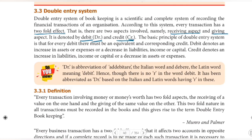In the double entry system we have basic rules, and based on those rules we will solve sums. These are called the golden rules of double entry system, or golden rules of accounting. The golden rules are based on the two-fold effect. The golden rule of accounting states: for every debit there must be an equivalent and corresponding credit. So for every debit transaction there must be a corresponding credit transaction.